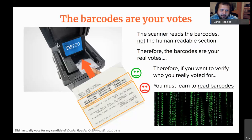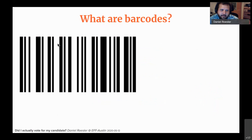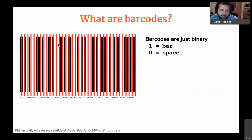That's when I started entering matrix territory — oh my god, I have to read the code. So I'm putting a warning here because we're about to go down the rabbit hole into barcodes. First off, what are barcodes? Barcodes are basically nothing more than binary: a one is a dark bar and a zero is a space. You can subdivide barcodes into segments — the wider the bar, the more ones; the wider the spaces, the more zeros.